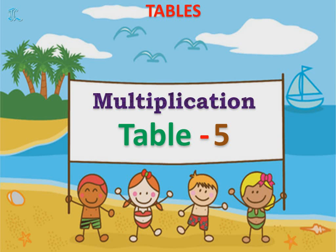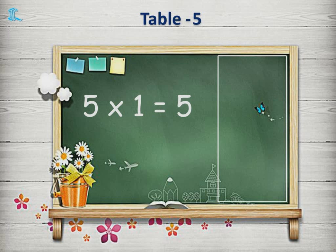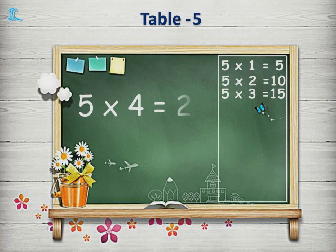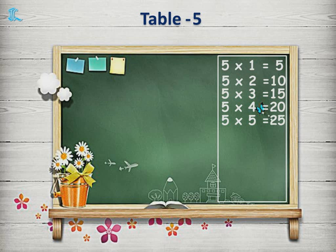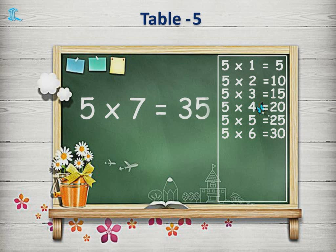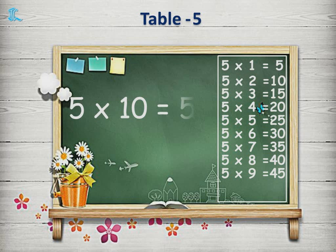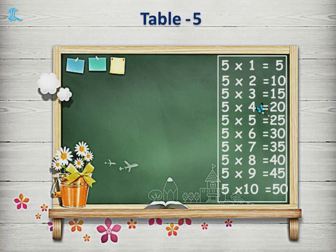Multiplication Table 5. 5 1s are 5. 5 2s are 10. 5 3s are 15. 5 4s are 20. 5 5s are 25. 5 6s are 30. 5 7s are 35. 5 8s are 40. 5 9s are 45. 5 10s are 50. So let's repeat the Table 5 once again!